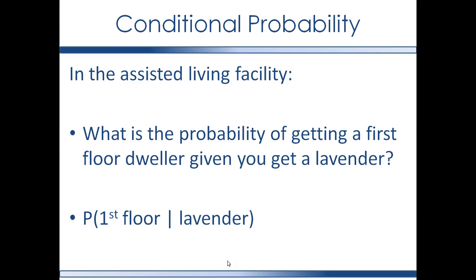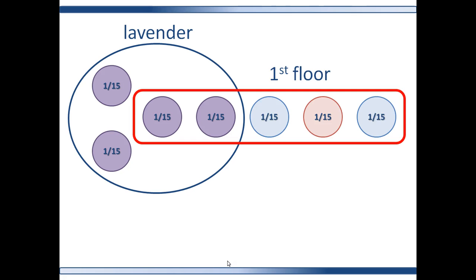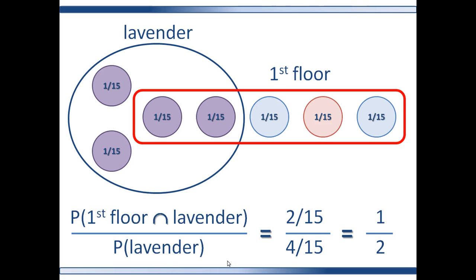Let's go back to the assisted living facility and ask: what is the probability of getting a first floor dweller given that you get a lavender? So it is given that you have a lavender — what is the probability that you will get a first floor dweller? The probability of getting a first floor dweller given that you get a lavender is the probability measure on the intersection of the set first floor and the set lavender, divided by the probability measure on the set lavender.